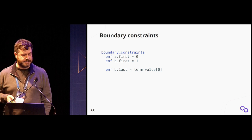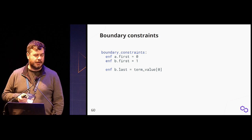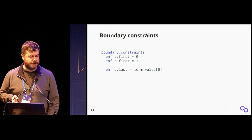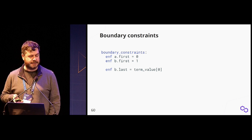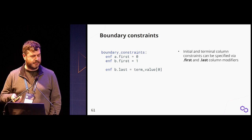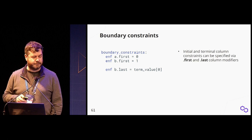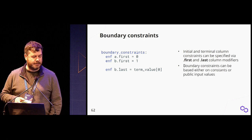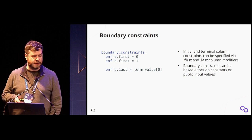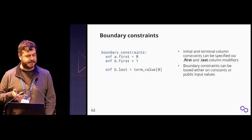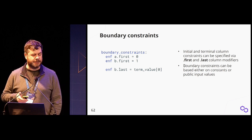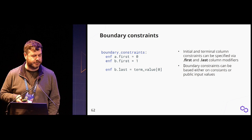Boundary constraints are fairly simple. You can specify the first and last value in each column using the 'enf' keyword to assert a constraint. For example, we assert that the first value in column A is zero and the first value in column B is one. The 'first' and 'last' modifiers on columns specify which row. You can use constants or references to public inputs—for instance, asserting that the last value in column B equals the first value from the public input named 'term_value'.